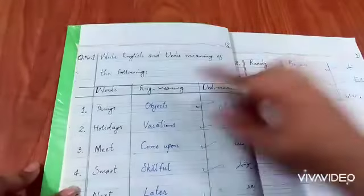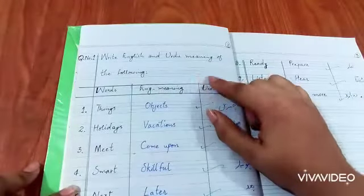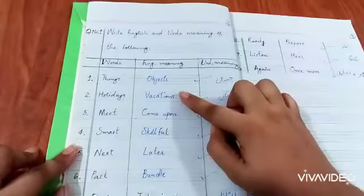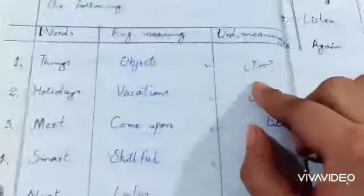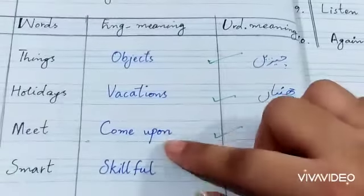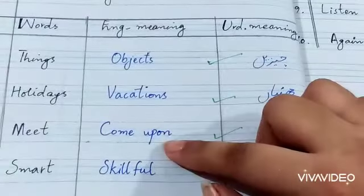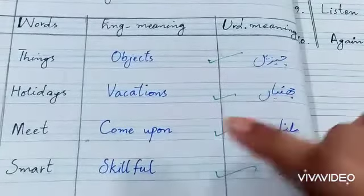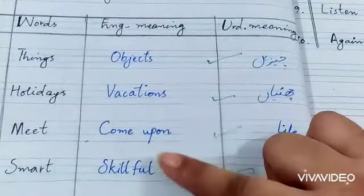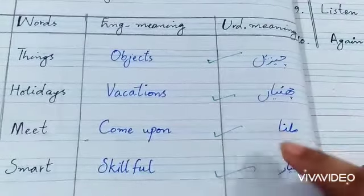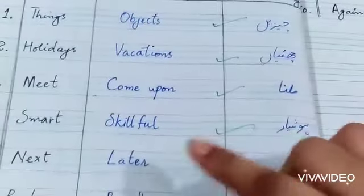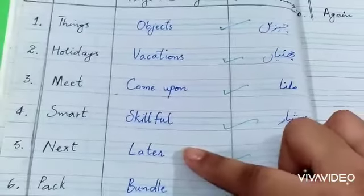Write the English and Urdu meaning of the following words. Number 1: Things — Objects — Cheeze. Number 2: Holidays — Vacations. Number 3: Meet. Number 4: Smart.